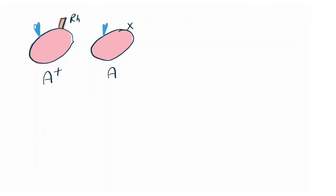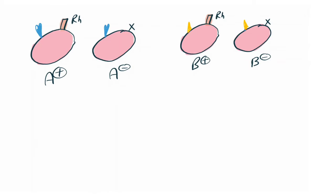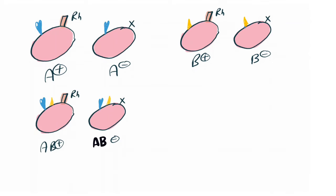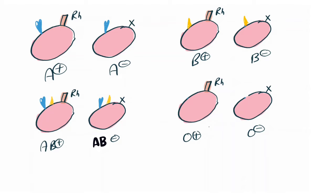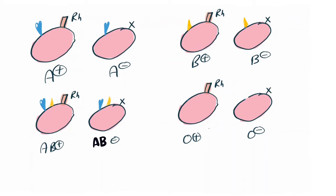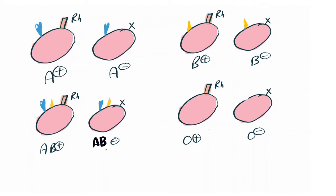Similarly, if blood group B has the Rh antigen then it is B positive, and if it has no Rh antigen then it is B negative. If blood group AB has the Rh antigen then it is AB positive, and if it has no Rh antigen then it is AB negative. With blood group O, if it has the Rh antigen it is O positive, and if it has no Rh antigen it is O negative.